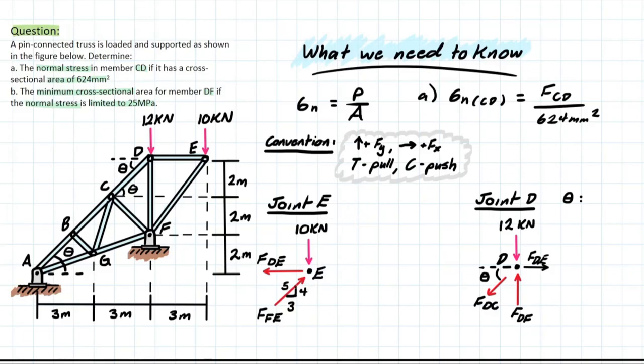We know that we have only one unknown Y, so it would be wise to start with summation of Y equals 0. We're going to be looking at 0 which is equal to negative 10, which is that external force pointing down, and then we're going to be adding the Y component of FFE, which is going to be 4 over 5. Solve for that, the signs are going to work out, and we're going to be left with 12.5 kilonewtons. And that's going to be in compression because it's pushing towards the joint.